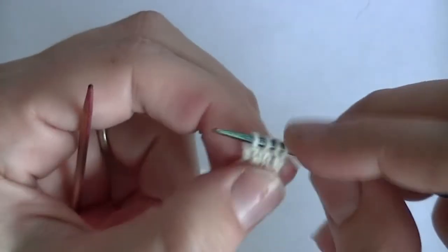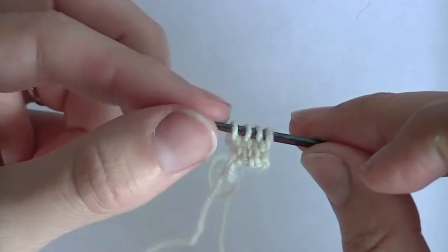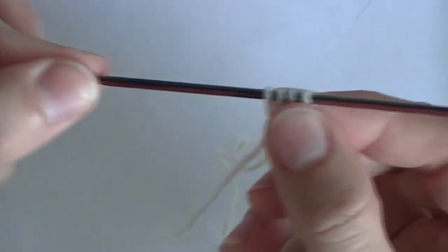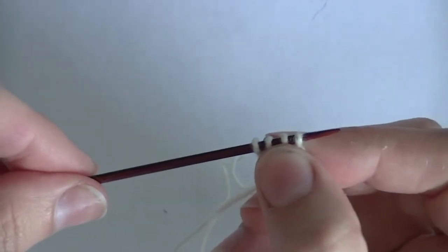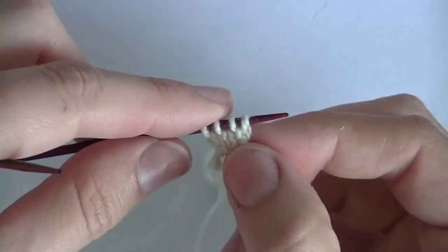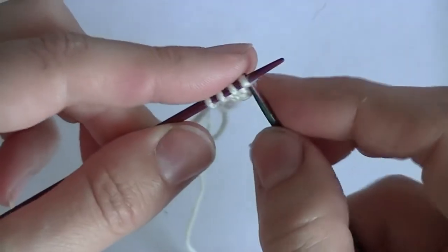Okay, now we have another row completed. Do the same thing. You'll slide this all the way down to the right side. And repeat.